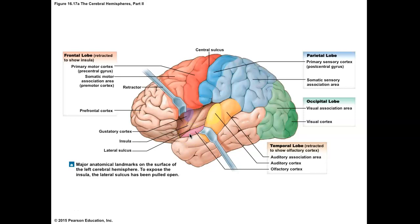The last lobe is the insula, which is hidden inside the brain — think of it as insulated. It's the gustatory cortex. Gustation is the sense of taste, so this area processes taste. It also has a role in equilibrium and language.